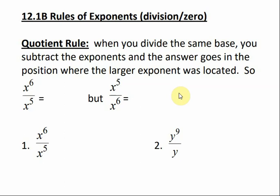The quotient rule says that when you divide the same base, you subtract the exponents. Remember with the product rule, when we were multiplying the same base, we added the exponents. Now when we divide the same base, we subtract the exponents. And the answer goes in the position where the larger exponent was located.